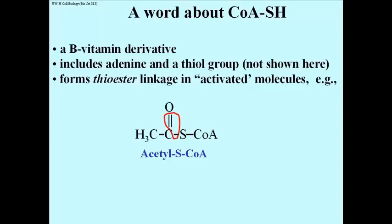In its interaction with pyruvate, pyruvate loses a carbon to become carbon dioxide, and the remaining two carbons of pyruvate are the acetate. The acetate forms a thioester linkage with the Coenzyme A.